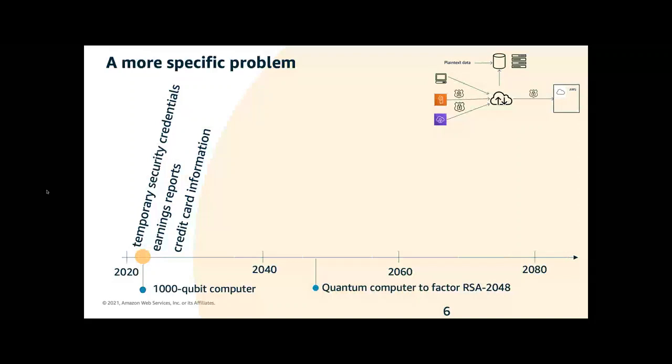For information like temporary credentials, maybe you need minutes to hours. Earning reports or credit card information, up to five to eight years, maybe, all in a time frame we can be reasonably certain that no such large-scale quantum computer exists. But if we start to look a little further out at shopping habits or classified information, we're out 20 to 30 years where we might want to augment the security properties provided by our existing public key protocols.